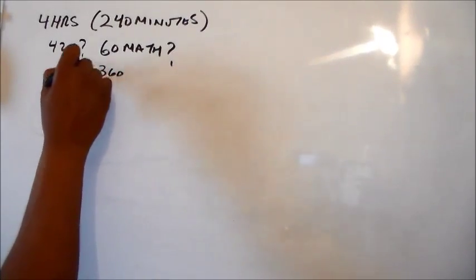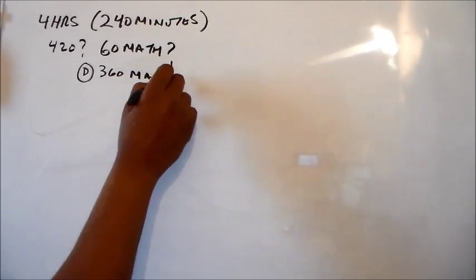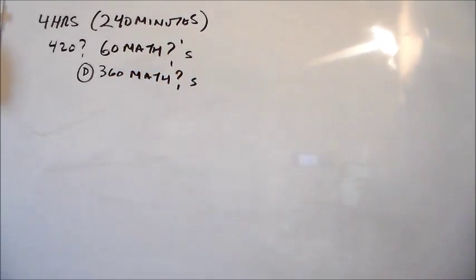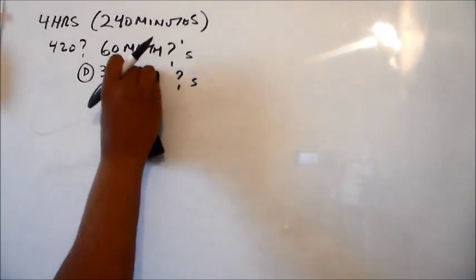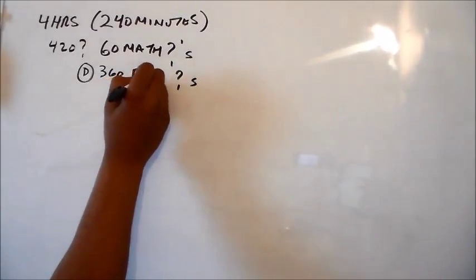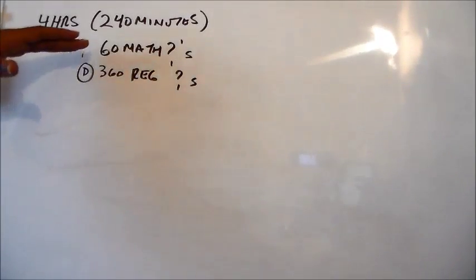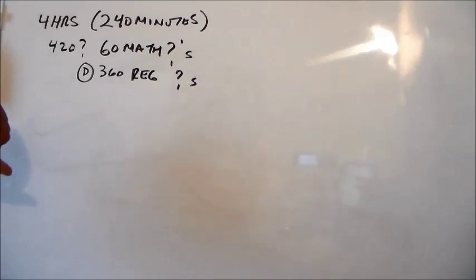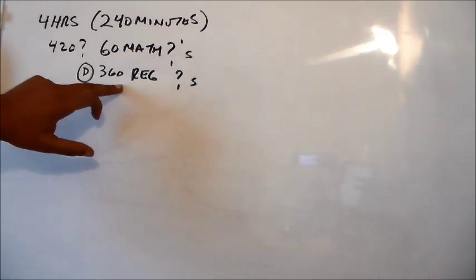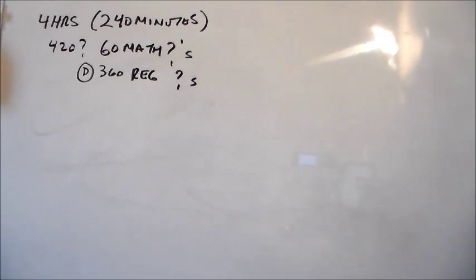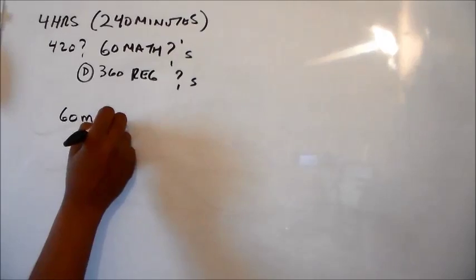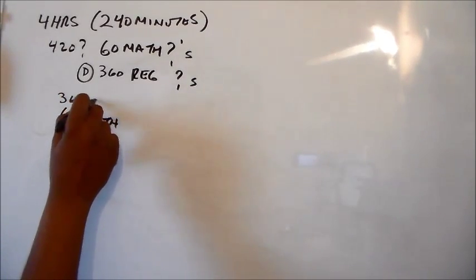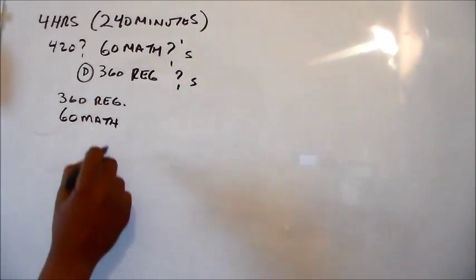So we have 60 math problems. So if we have 60 math problems, then 360. And I'll just put a D here for what we've deduced. So if we have 60 math questions, we have 360 regular, not math. I'm getting stuck on math. Regular questions. So these two numbers equal 420 because they say 60 of these are math. Total 420. So I deduced that 360 of these are regular questions. So what I'm going to do is I'm going to just set up a little small table. 60 math questions. And I will put 360 on the top. 360 regular. R-E-G will represent regular.